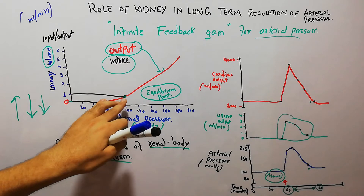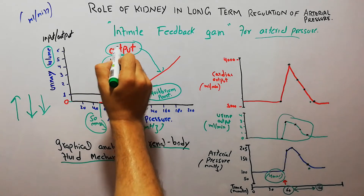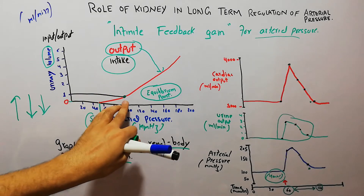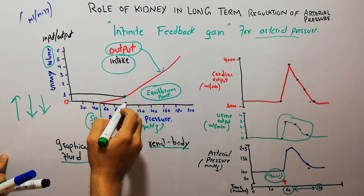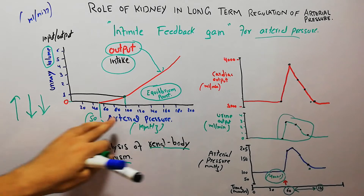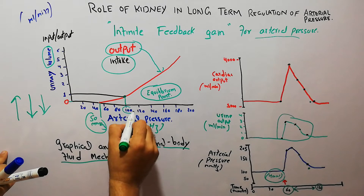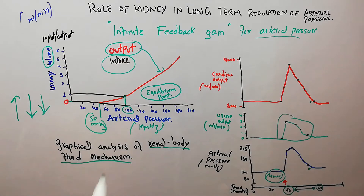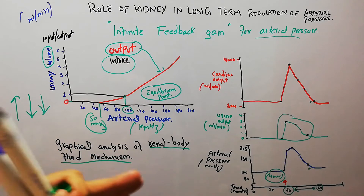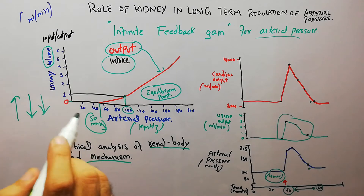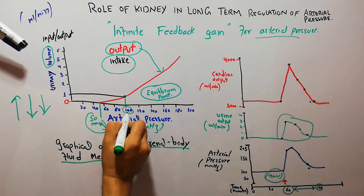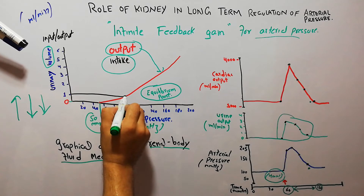There is a point at which the renal output and the intake of salt and water remain the same, and that level is basically known as the equilibrium point. This equilibrium point is at around 100 mmHg arterial pressure, where the intake of salt and water and the renal output remain constant and balanced.